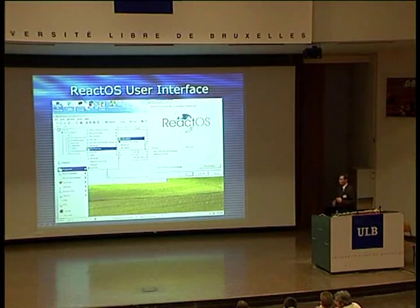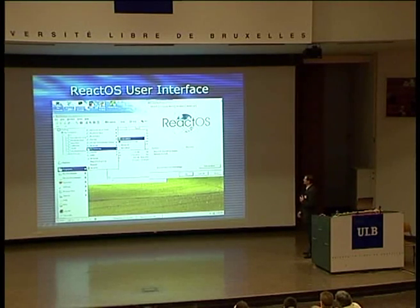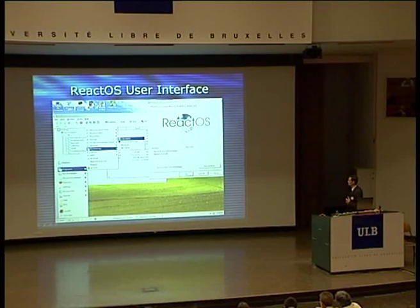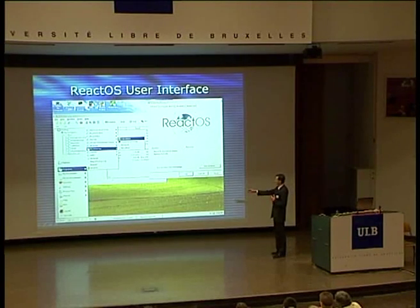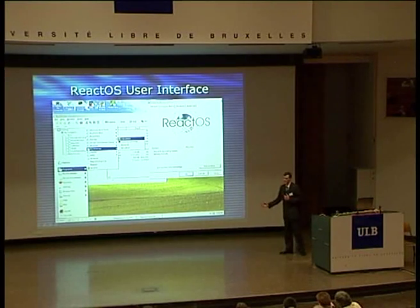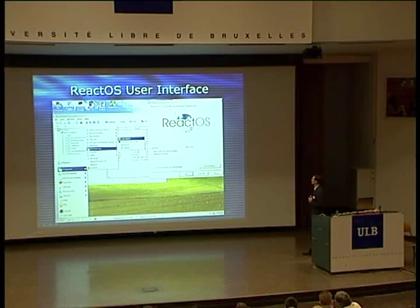So back to ReactOS — this is how it looks like. As you see, it looks like an actual real Windows replacement. We even made an Explorer replacement which has quite a similar interface — you see this start menu. We have AbiWord installed, we have mIRC installed, which was just downloaded from the internet and set up there. Firefox of course works.